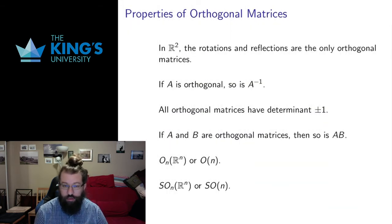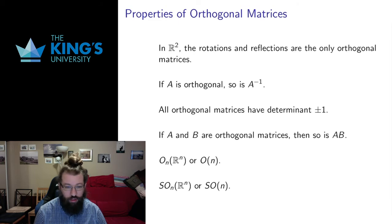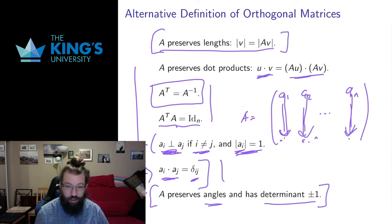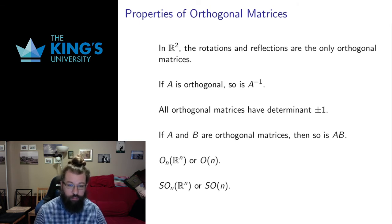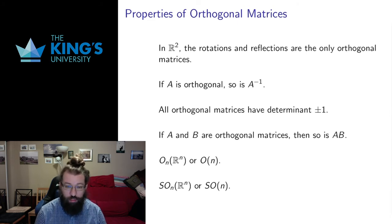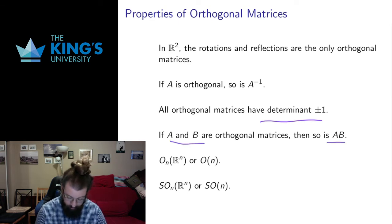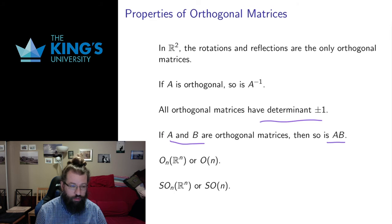Some properties of orthogonal matrices: in R2, the only orthogonal matrices are rotations and reflections. If a matrix is orthogonal, so is its inverse — if going forward doesn't change lengths, then going backward won't either. All orthogonal matrices have determinant plus or minus one. And if you have two orthogonal matrices and compose them by matrix multiplication, the composition is also orthogonal — if each step preserves lengths, doing them in sequence preserves lengths as well.